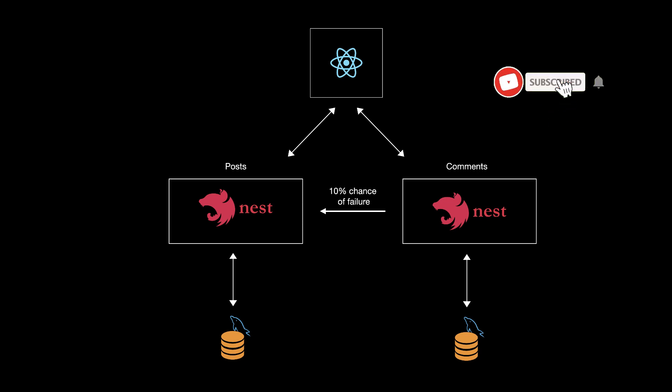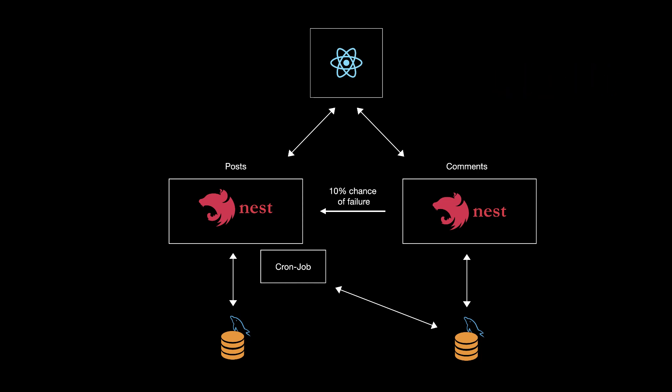In this video, we will continue the series for NestJS microservices by adding a cron job to synchronize the databases. In the previous video, we had a service with a 10% chance of failure when creating comments from the comments microservice to the post microservice, which caused some missing information. In this video, we will add a cron job that will synchronize both databases.